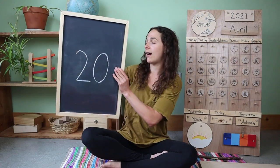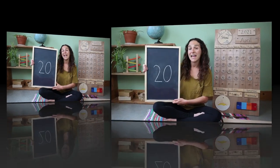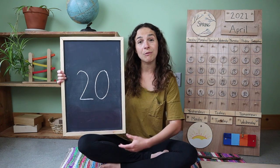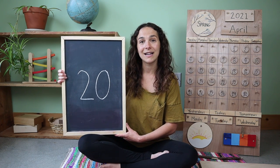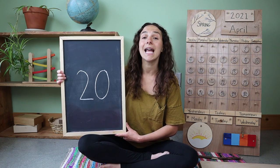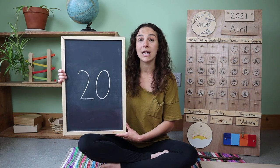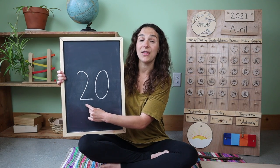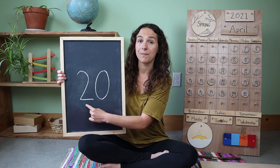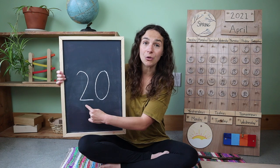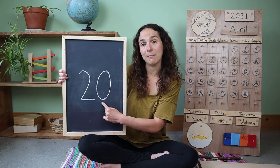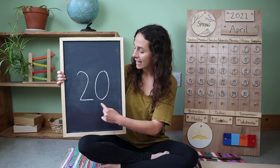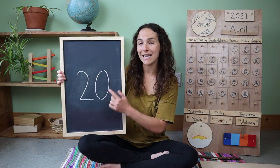Now let's move on to the number of the week. This is a double digit number. Do you remember what number this is? 20. And when you write the number 20, you have to write two numbers. First you write this number — this is the number two. And then you write this number — the number zero. Two, zero. 20.